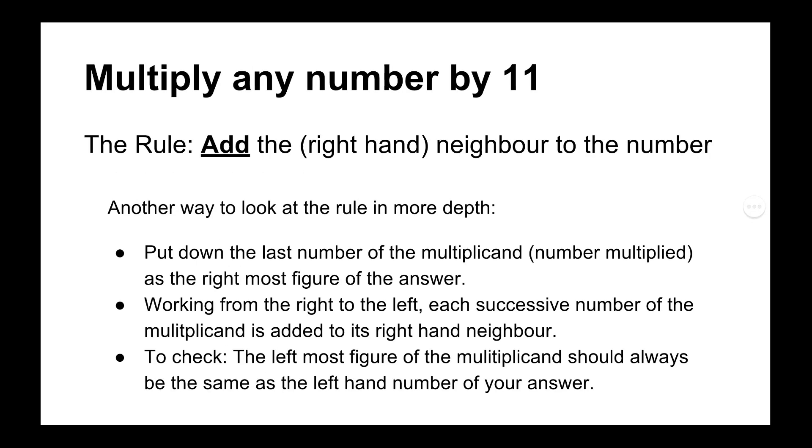So we're going to start off with multiplying by 11 because 11 has got probably the easiest rule to remember, and that is to add the right-hand neighbor to the number.